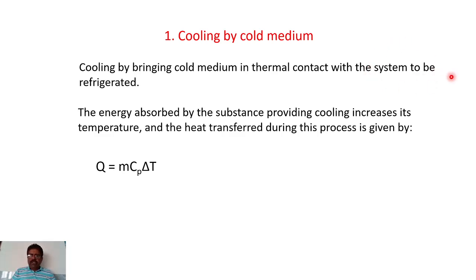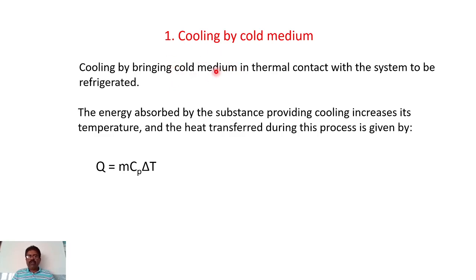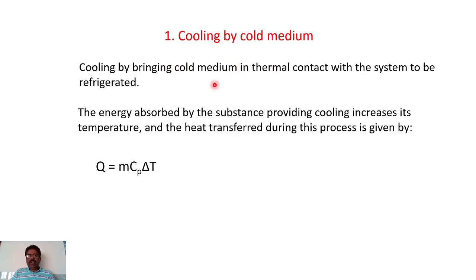Heat transfers from the system at higher temperature to the cold medium, so the system temperature falls while the temperature of the cold medium rises. To continue the process, the cold medium should be properly circulated so that there is a fresh supply, and the temperature continues to fall until the required temperature is achieved. Thereafter, to maintain the temperature, a fresh supply of cold medium must continue to be provided.